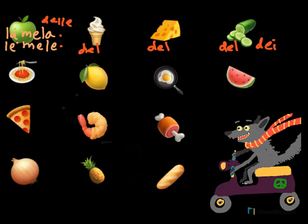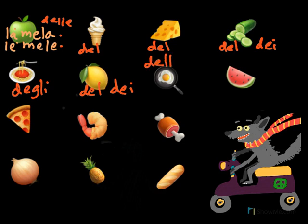Then you have 'spaghetti' — it will be 'degli spaghetti' because the article is 'gli.' The next item is 'limone' — lemon. You would say 'del limone' if singular, or 'dei limoni' if you buy many of them. The next one is an irregular plural — it will be 'delle uova.' Why? Because 'uova' is the plural, so some eggs will be 'delle uova.'